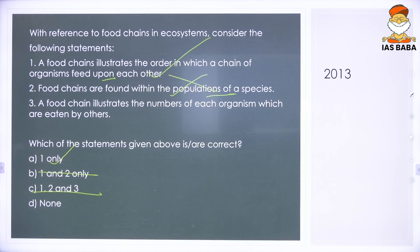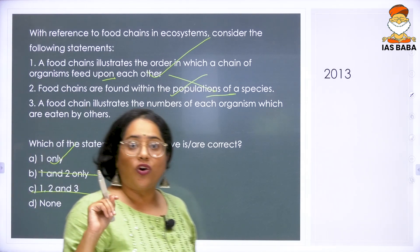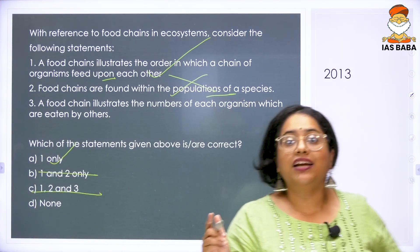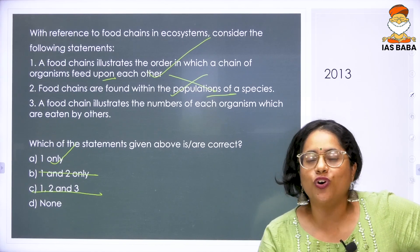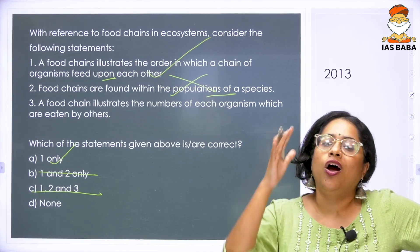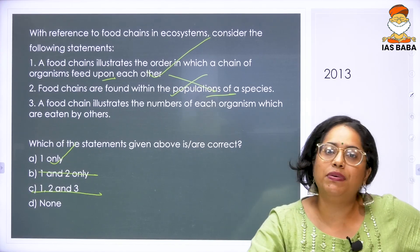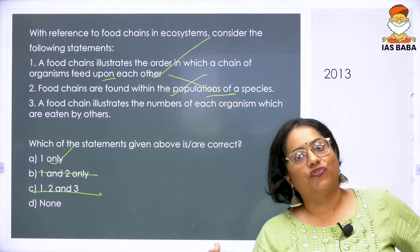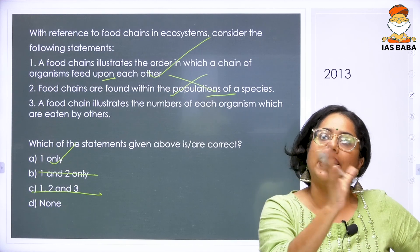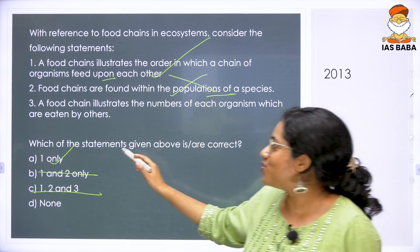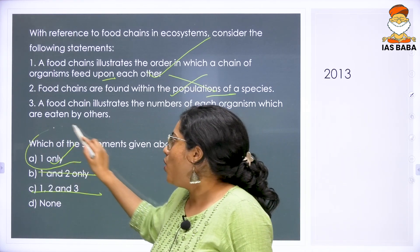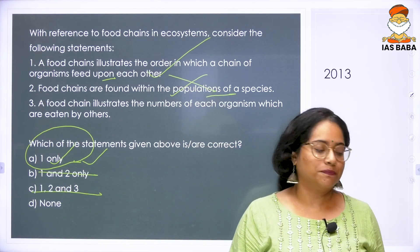Statement 3 says a food chain illustrates the numbers of each organism eaten by others — you cannot have that, because a food chain only shows the arrangement. You will not know how many rabbits are eaten by the fox; you just know the fox can eat the rabbit. So the answer to this question is 1 only.